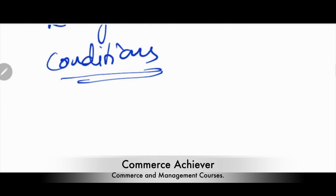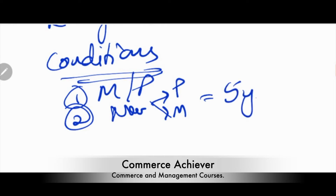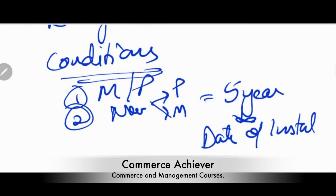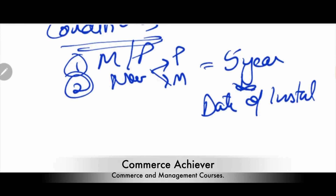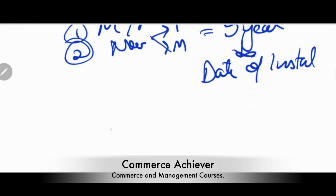The conditions include that the SSC must be engaged in any manufacturing or production of any article. After that, the new asset purchased must not be transferred for five years from the date of installation. If transfer happens within five years, the deduction claimed will become taxable in that year of transfer.